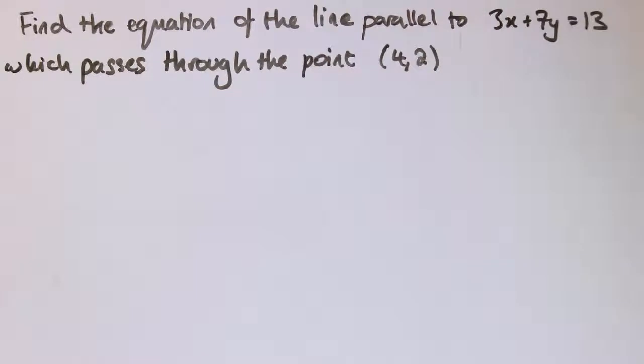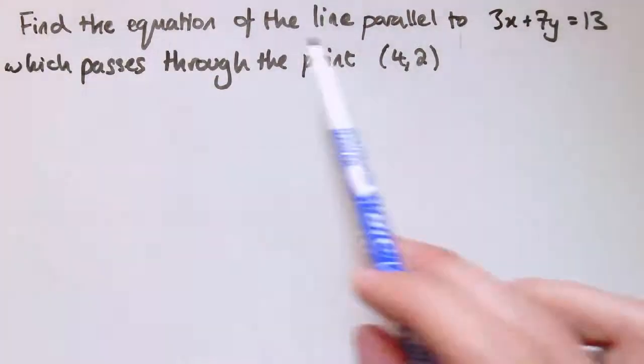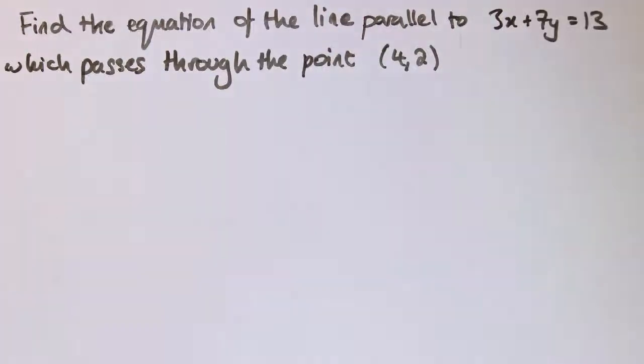In this video I'm going to look at some problems involving parallel and perpendicular lines. Firstly, we want to find the equation of a line which is parallel to 3x plus 7y equals 13 and passes through the point (4,2).